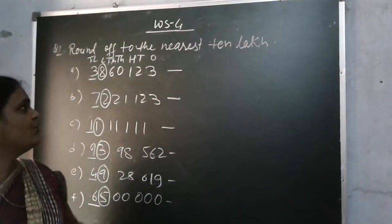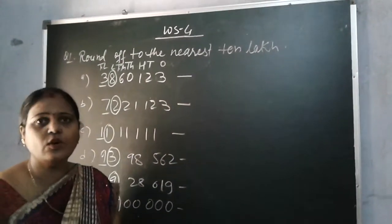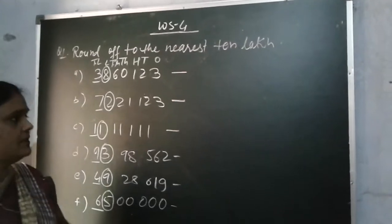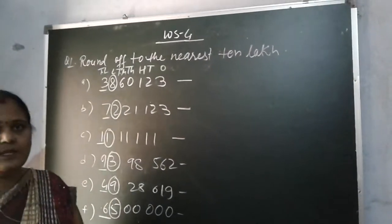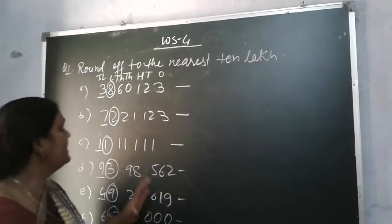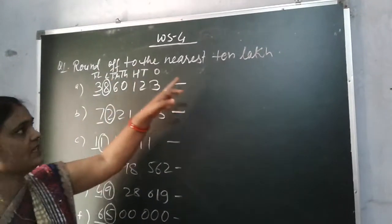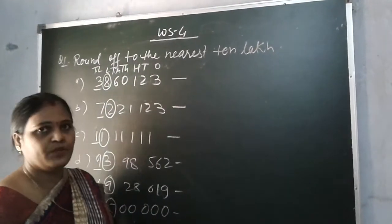Welcome children. Today I am going to start worksheet 4 of the rounding of numbers chapter. Now let's see the first question. First question is: round off to the nearest 10 lakh.